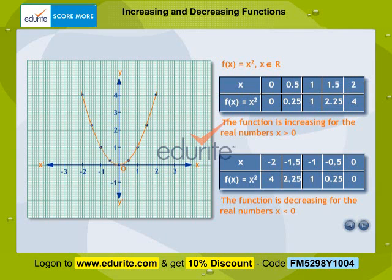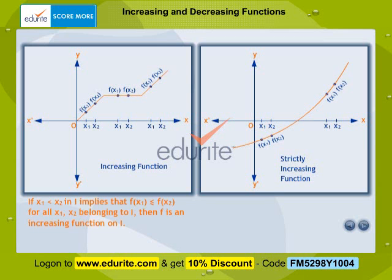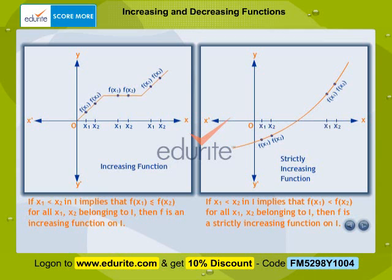Let I be an open interval contained in the domain of a real valued function f. If x1 less than x2 in I implies that f(x1) is less than or equal to f(x2) for all x1, x2 belonging to I, then f is an increasing function on I. If x1 less than x2 in I implies that f(x1) is less than f(x2) for all x1, x2 belonging to I, then f is a strictly increasing function on I.